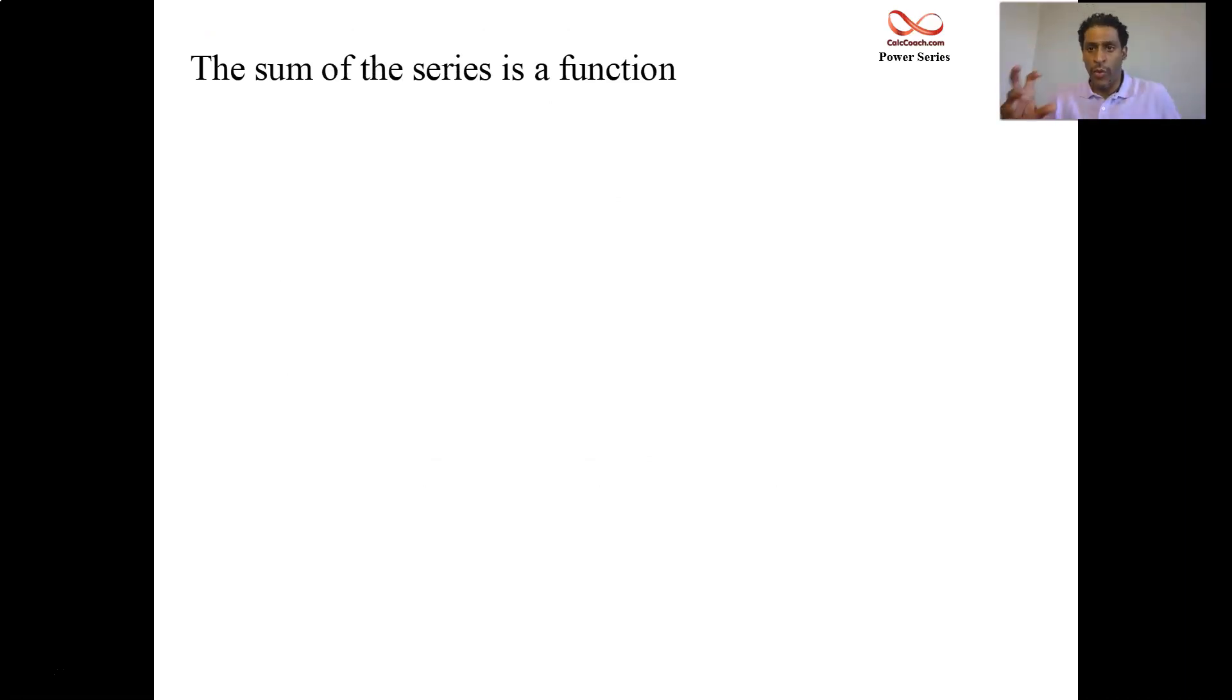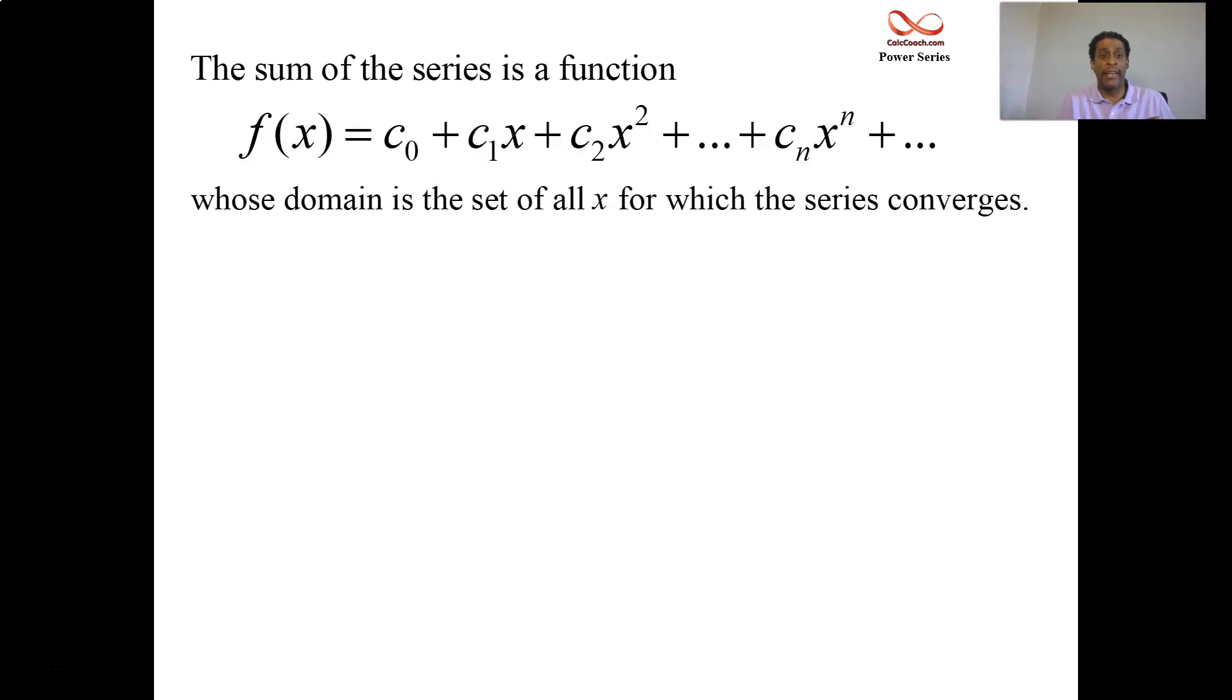We're going to say that the series will be equal to a function. That's going to be the sum. The sum is actually going to be a function now. Functions have domains. And so the domain of the function, basically you're representing a function as a series. This polynomial looking kind of expansion that goes on forever. The domain will be the x's that will basically cause this series to converge. So your function might have a certain domain, but the power series, you can only use the equal sign for x's that make the series converge. F of x can be used for other things, but when you want to represent f of x as a power series, you can only use it for the x's that make it converge.